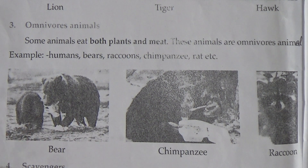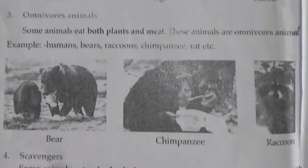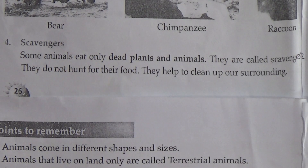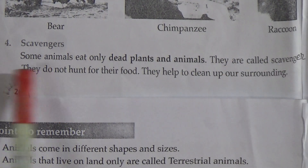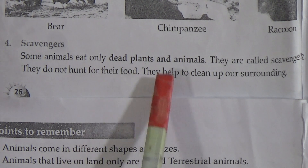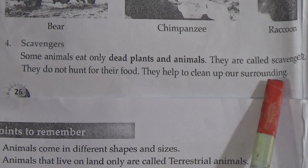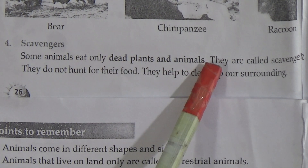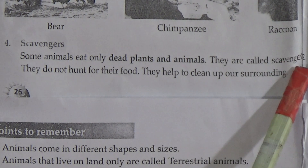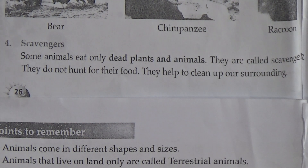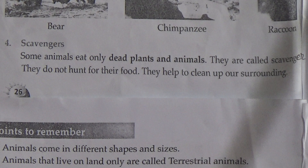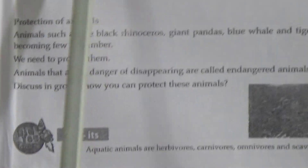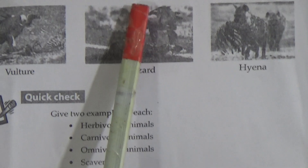Number four: scavengers. Some animals eat only dead plants and animals — they are called scavengers. They do not hunt for their food. They help to clean up our surroundings. Examples of scavengers are crows, vultures, buzzards, and hyenas.